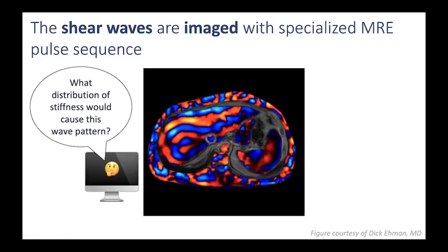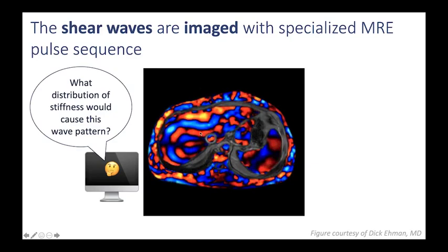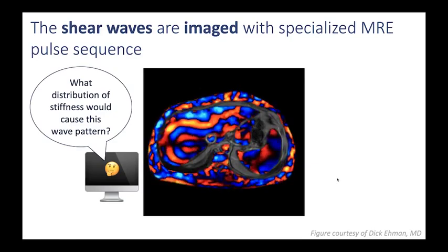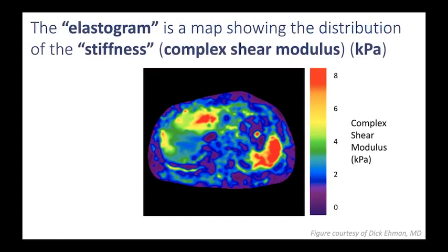The computer algorithm then asks itself what distribution of stiffness would cause this wave pattern — a so-called inversion problem. Based on solving that inversion problem, the wave information is inverted into an elastogram. An elastogram is a parametric map showing the distribution of stiffness throughout the abdomen. The mathematical term for stiffness is the complex shear modulus, with units of kilopascals. Here we have an elastogram showing the distribution of stiffness in the abdomen, ranging from very soft structures such as adipose tissue to stiffer structures such as the spleen and portions of the liver.